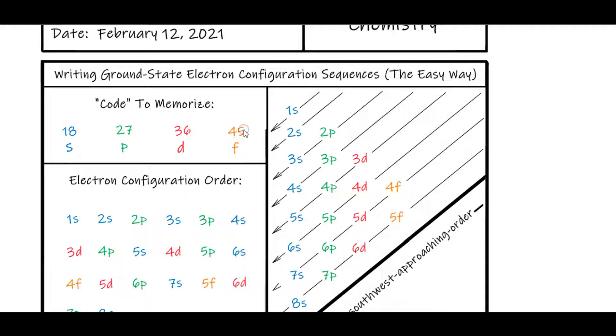You write that across. And then the orbital order for writing ground state electron configuration sequences is S, P, D, F. So it's easy to memorize S and then like the document, P, D, F.